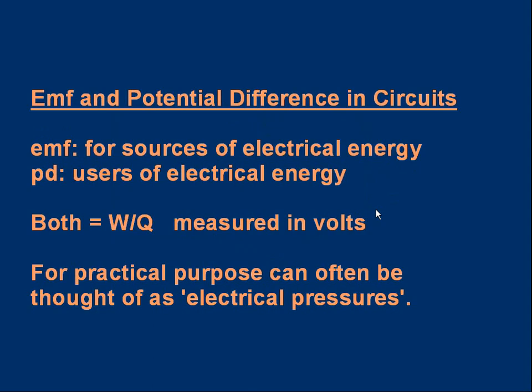Okay a little summary. First of all let's remind you that EMF, electromotive force, is a term we apply to sources of electrical energy like batteries. Potential difference PD or voltage is applied to things that use electrical energy like bulbs. They both can be calculated by dividing the amount of energy transferred by the charge flowing through the object and that will give you, if you divide the energy transferred in joules by the charge in coulombs, you get the EMF or the voltage in volts.